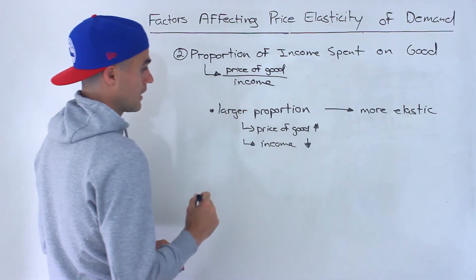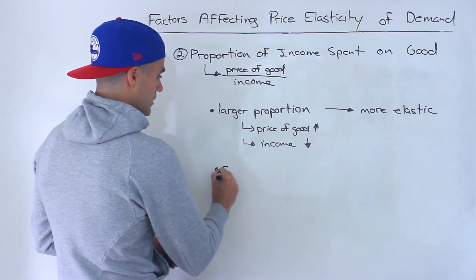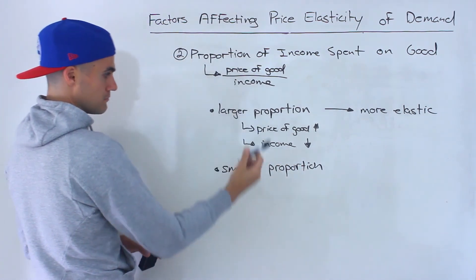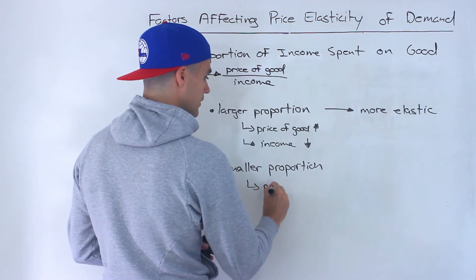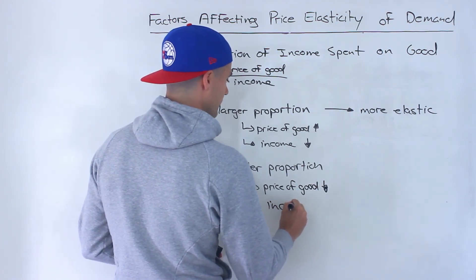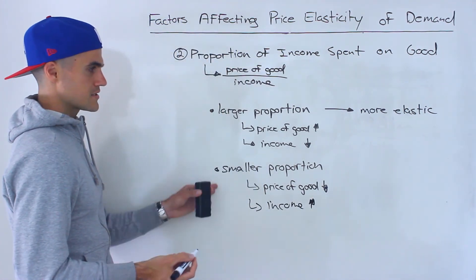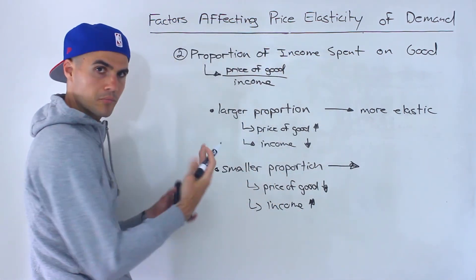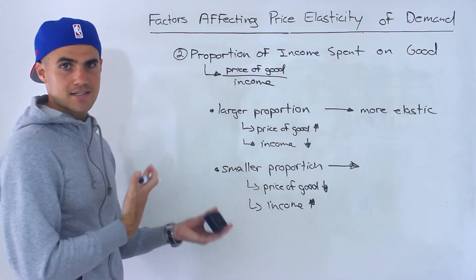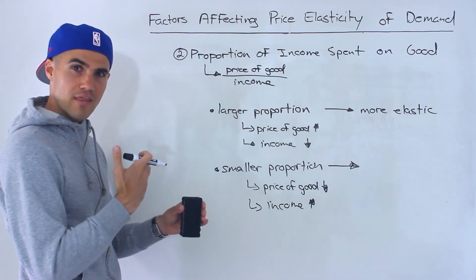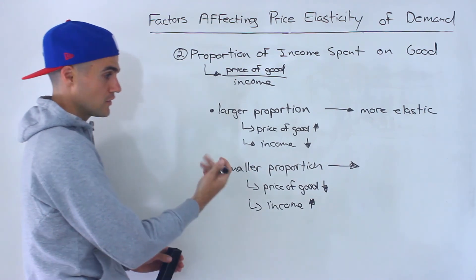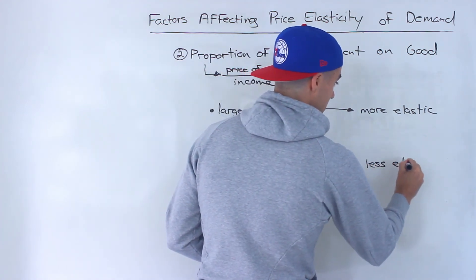A smaller proportion — how can this fraction be smaller? We can make the numerator smaller, so the price of the good is lower, or the income is higher. Intuitively, if it's a smaller proportion of your income — like a pack of gum — if the price increases you're not going to be as sensitive to that price change, so your demand for that gum isn't going to change as much. So if a good represents a smaller proportion of your income, that good is going to be less elastic, or more inelastic.